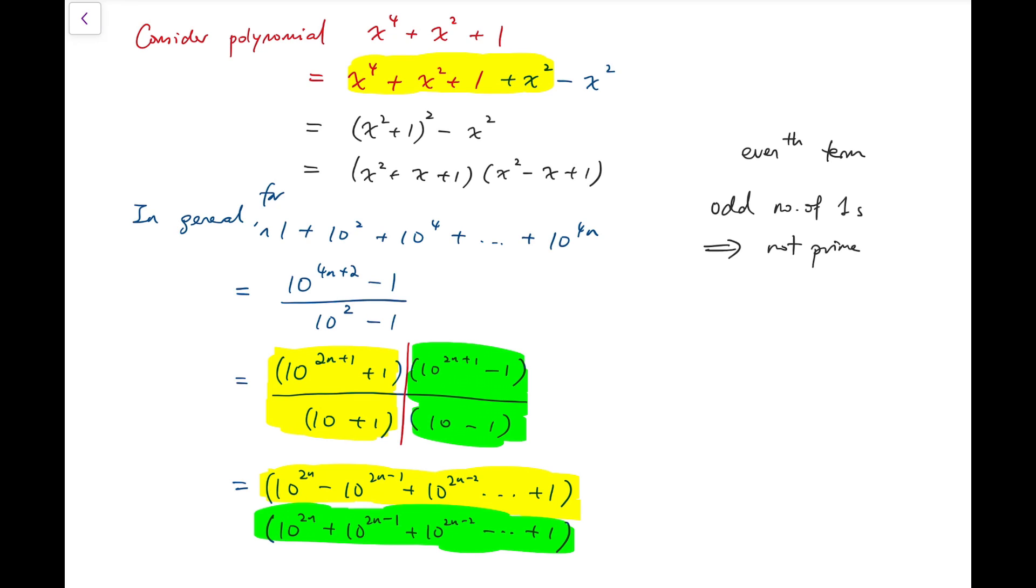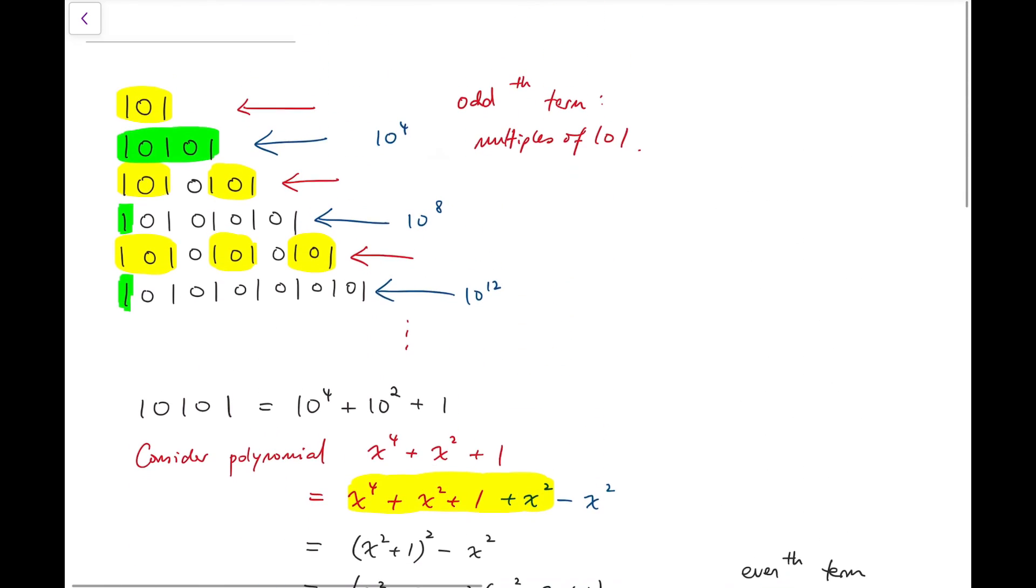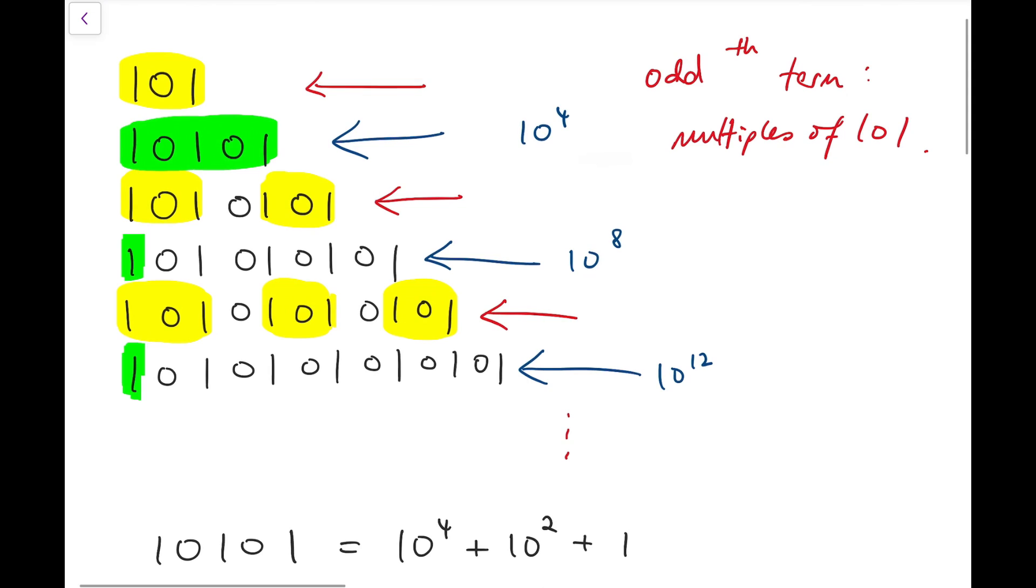Does that mean that all numbers in the entire sequence are not prime numbers? The answer is no, because if we go back to our first part of our work, we know that the odd terms, the terms labelled in red, are all multiples of 101.